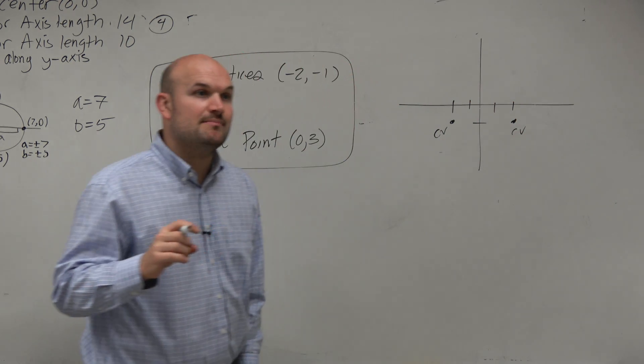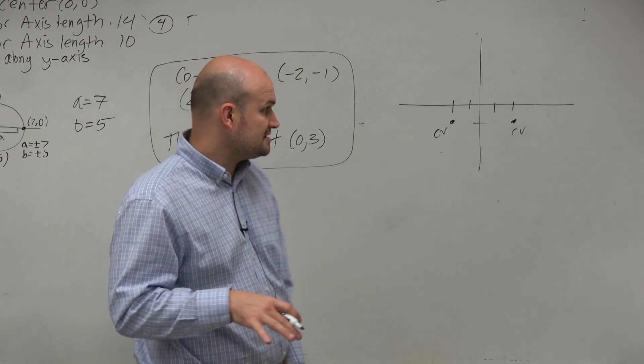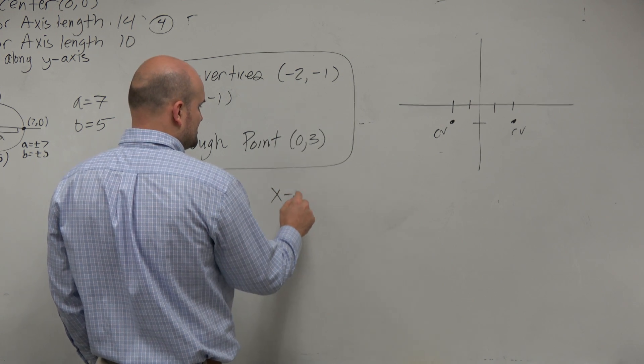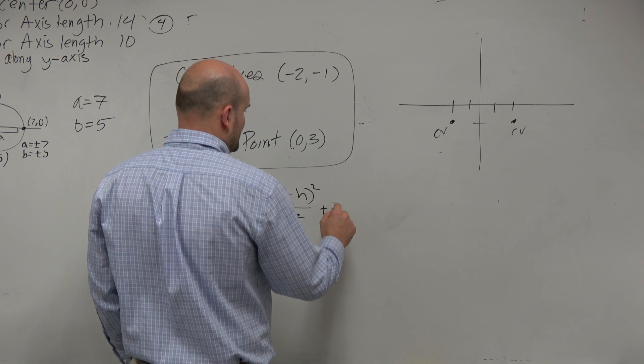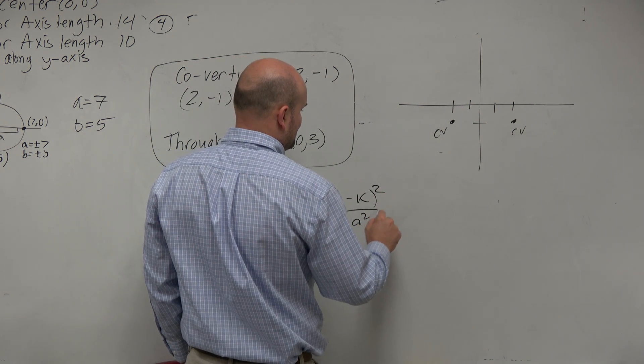Now that immediately tells me that my major axis is now going to be vertical, right, because my covertices lie on the minor axis. So I can automatically just write the equation for a vertical major axis. That's x minus h squared over b squared plus y minus k squared over a squared equals 1.